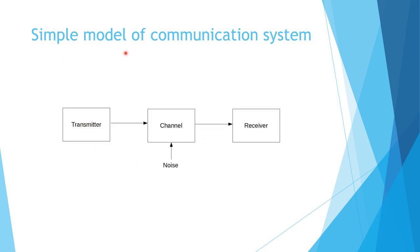A simple model of the communication system shows two entities — transmitter and receiver — through which information transfer takes place via a channel. There is noise which decreases the information received at the receiver end.